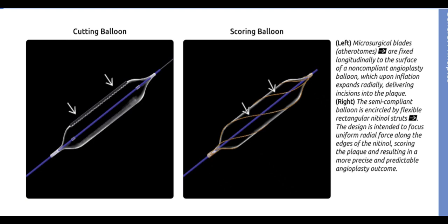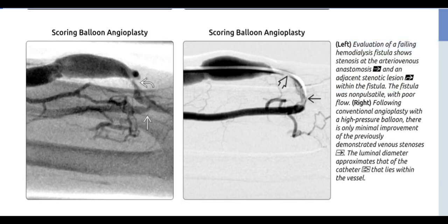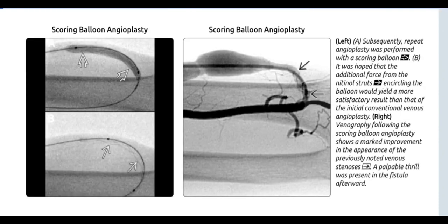The semi-compliant balloon is encircled by flexible rectangular nitinol struts; the design is intended to focus uniform radial force along the edges of the nitinol, scoring the plaque and resulting in a more precise and predictable angioplasty outcome. Evaluation of a failing hemodialysis fistula shows stenosis at the arteriovenous anastomosis and an adjacent stenotic lesion within the fistula; the fistula was non-pulsatile with poor flow. Following conventional angioplasty with a high-pressure balloon, there is only minimal improvement of the venous stenosis. Subsequently, repeat angioplasty was performed with a scoring balloon, and it was hoped the additional force from the nitinol struts would yield a more satisfactory result. Venography following scoring balloon angioplasty shows marked improvement in the previously noted venous stenosis; a palpable thrill was present in the fistula afterward.